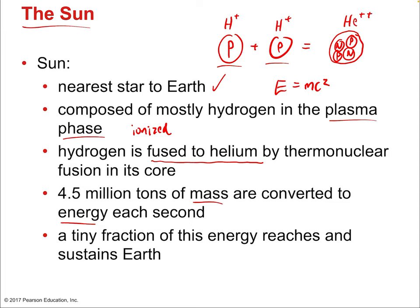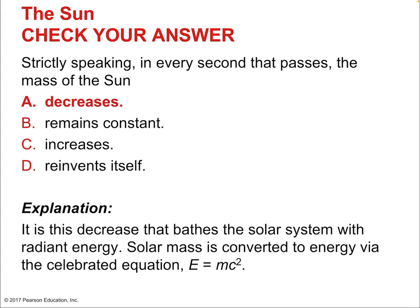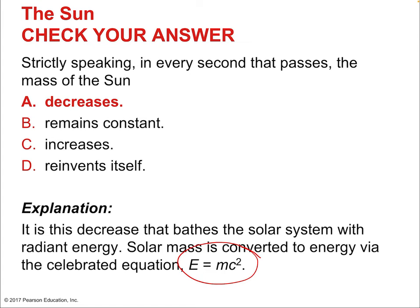A tiny fraction of this energy reaches and sustains Earth. The sun radiates energy in all directions; most of it misses Earth. Some of that wave of energy spreading out spherically crashes over Earth — that's the sunlight we experience every day that sustains life on Earth. Strictly speaking, in every second that passes, the mass of the sun decreases, because matter is becoming energy. In the process of protons fusing to form helium, the actual mass of the sun goes down.